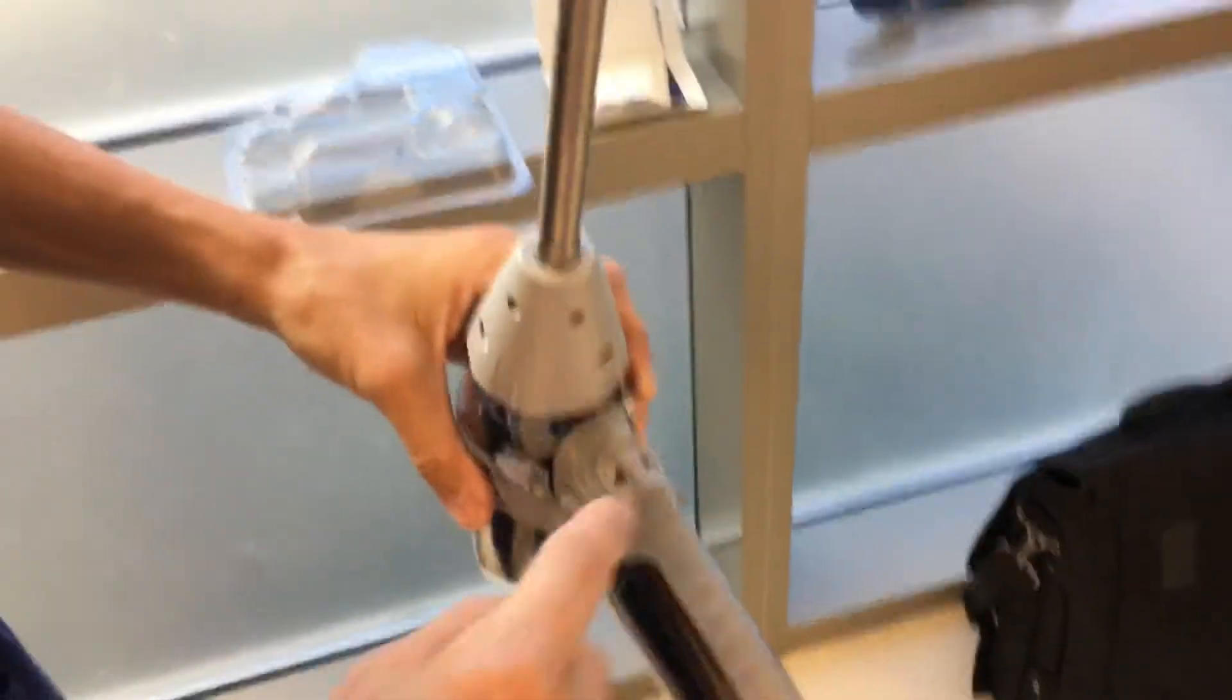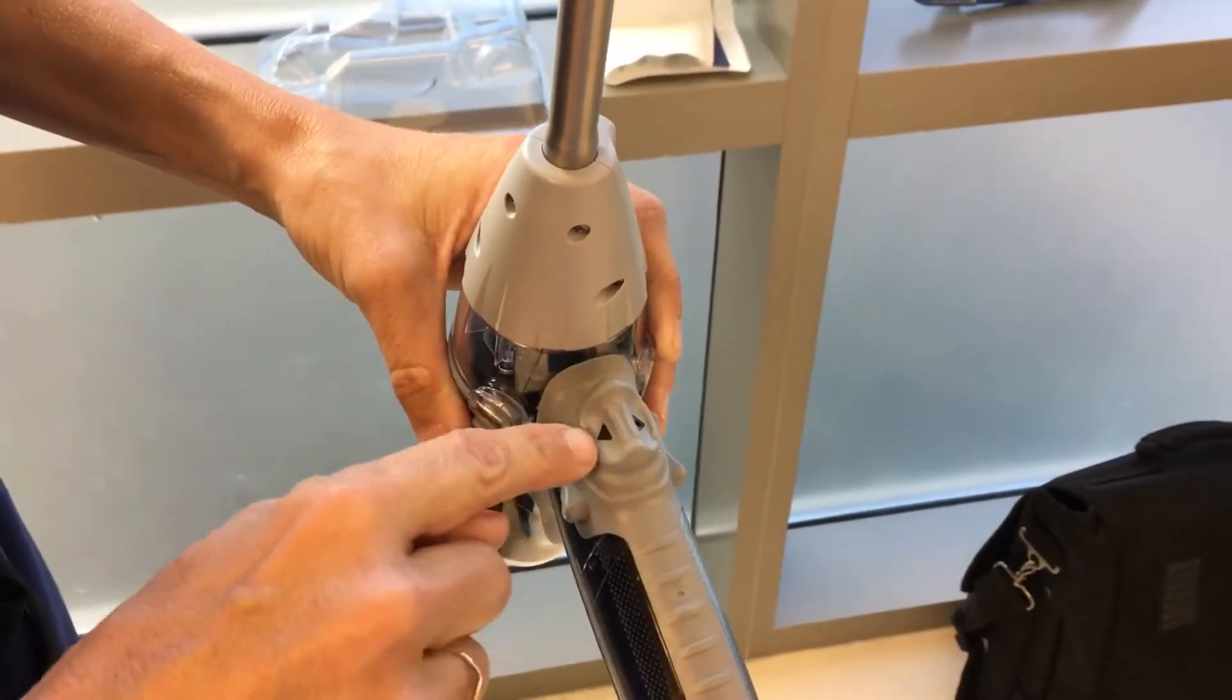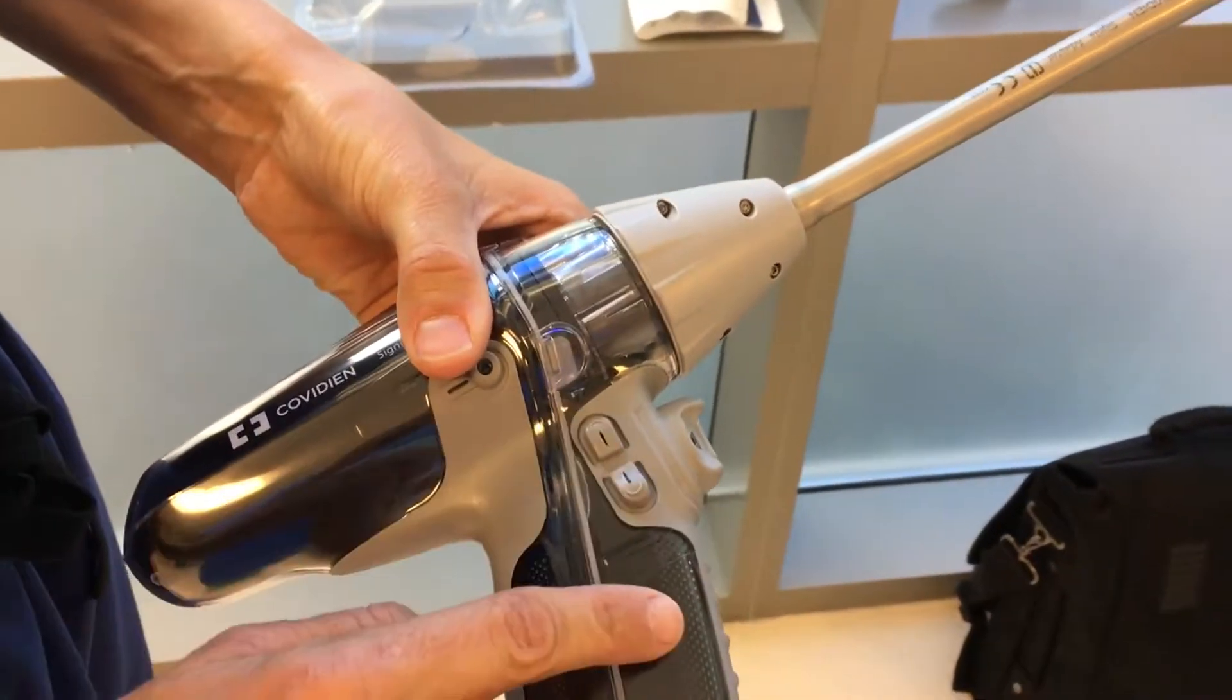On the back you'll see a four toggle switch. There's an up, down, side, side button, and then on the side a reticulation button.